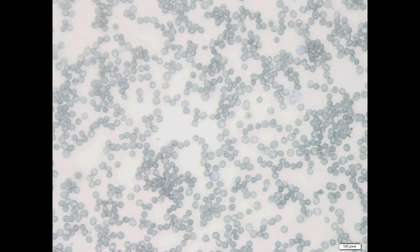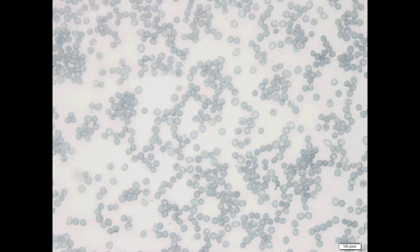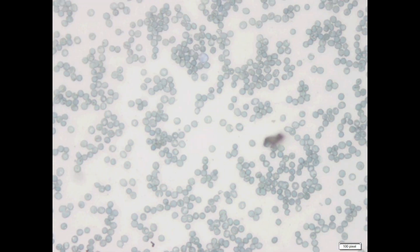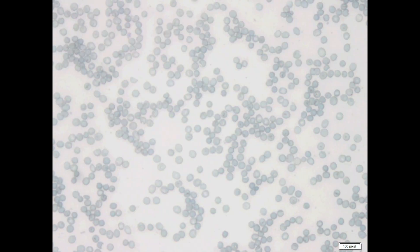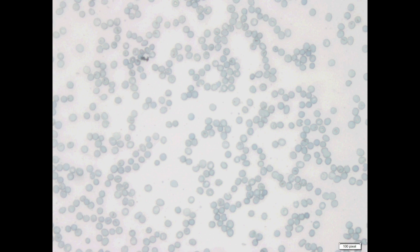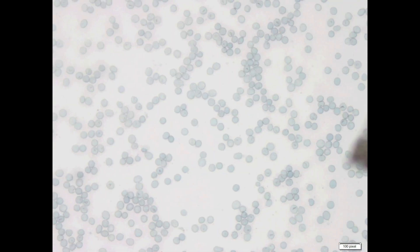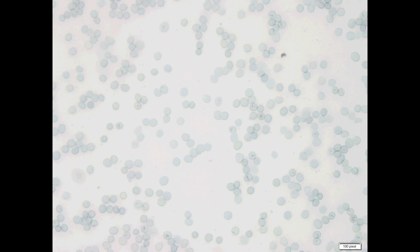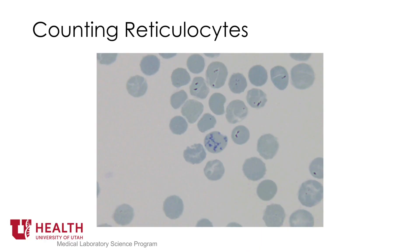Place the slide in the microscope using the 10x and 40x objective. Find an area where the cells are barely touching each other. Using the 100x objective, locate a single layer of cells and begin counting red blood cells.